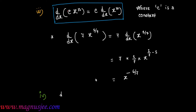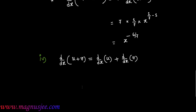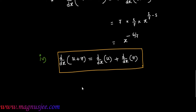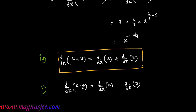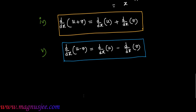Formula number 4: d/dx of (u + v) equals d/dx of u plus d/dx of v — the derivative of a sum equals the sum of the derivatives. Formula number 5: d/dx of (u − v) equals d/dx of u minus d/dx of v.